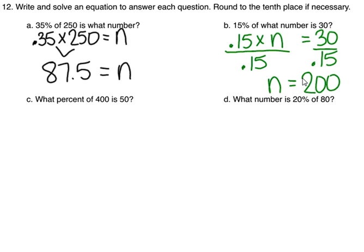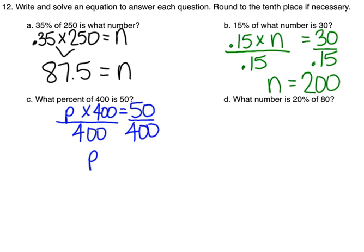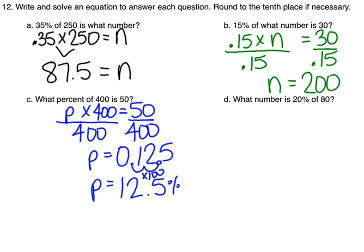Part C. What percent, so variable, of means multiply, and 400 is equals 50. So we'll divide by 400 on each side. That will give a decimal of 0.125. Since it's asking for a percent, I need to multiply by 100, which slides my decimal two places to the right, to get 12.5%. If it's asking for what percent, you'd want to write your answer in percent form. Then for part D, it says what number is equals 20%, so 0.20, of means multiply by 80. So 0.2 multiplied by 80 comes out to 60 and equals 60.